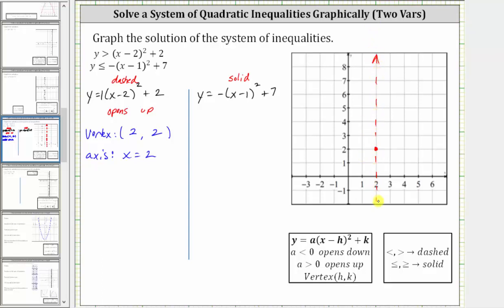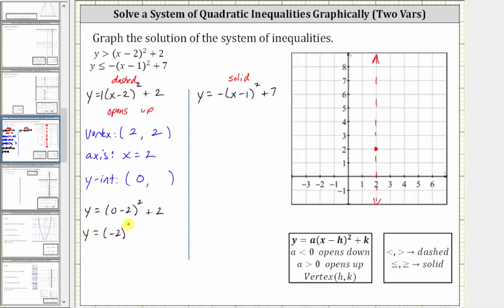To make an accurate graph of this quadratic function, let's find some additional points. Let's find the vertical or y-intercept. Every point on the vertical axis has an x-coordinate of zero, which is why we set x equal to zero to find the y-intercept. So if we set x equal to zero, we have y equals the quantity zero minus two squared plus two, which gives us y equals the square of negative two plus two, giving us y equals four plus two, which is equal to six.